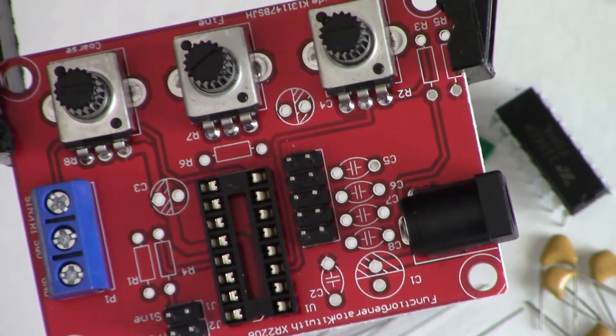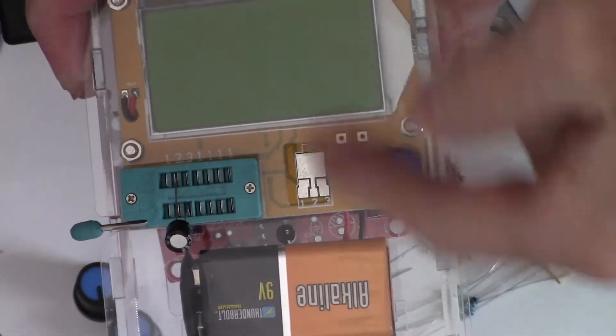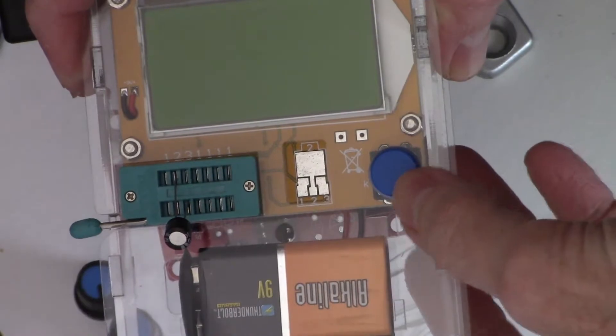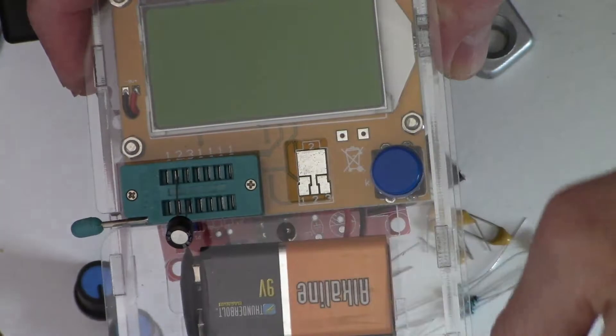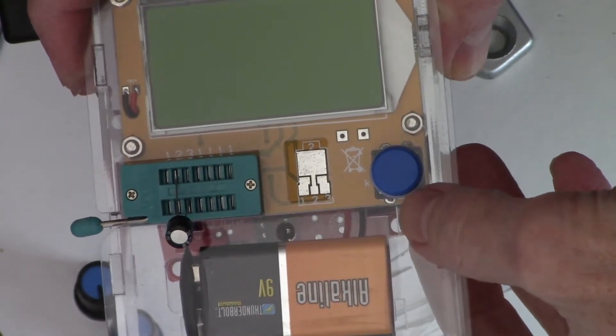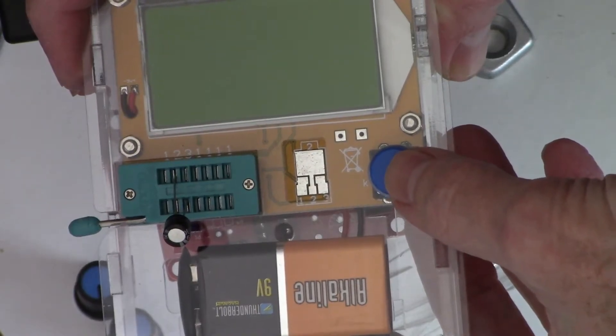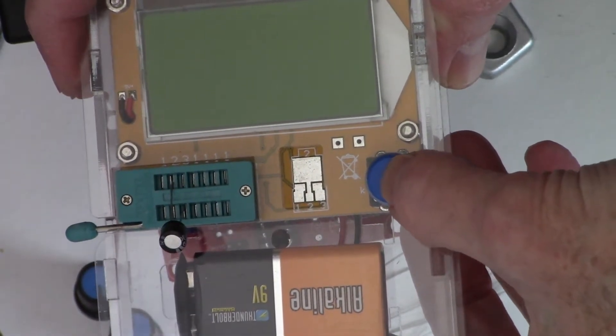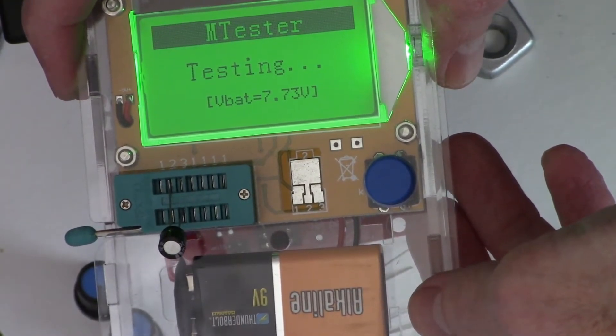So I always like to check my components. I have my trusty component checker here. The electrolytic capacitor is supposedly 100 microfarad. Let's see what the component tester says. It is, in fact, not too bad. Not bad at all. Well within tolerance.